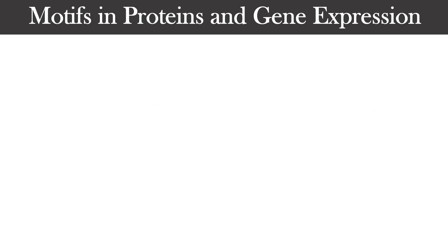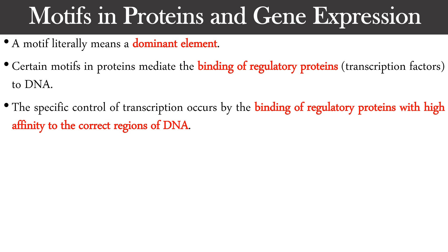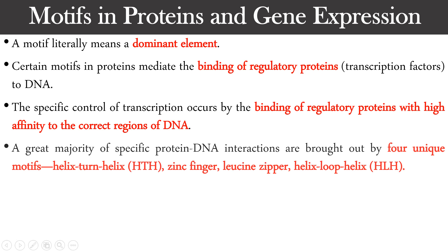These motif proteins are DNA binding proteins that bind with DNA and assist in gene regulation — the expression of genes. They either bind with the DNA or with mRNA. Motifs are a kind of dominant element in protein tertiary structure. These proteins bind with transcription factors, and motifs along with transcription factors bind with DNA or RNA to regulate expression. Specific control of transcription occurs by the binding of regulatory proteins with high affinity to specific regions of DNA, causing a particular gene to be expressed or managed.